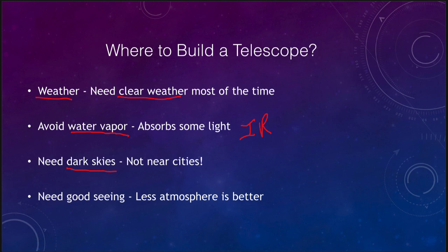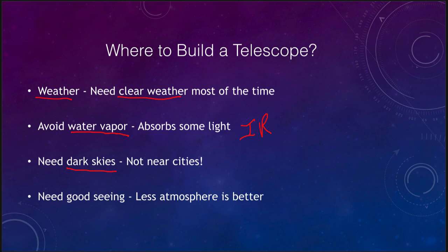We also need dark skies and don't want to observe near a city. A hundred years ago, large telescopes were built near cities like Chicago and Los Angeles, and it wasn't such a big deal then. But putting telescopes in those areas now is not a good thing. We tend to put them out in the deserts — places like Arizona and the desert southwest are very good because we get relatively dark skies, good weather most of the time, and we're up above most of the water vapor. Telescopes in Hawaii may not sound ideal for water vapor, but when you're high up on the mountains, you're above most of the water in the atmosphere, and with less atmosphere to look through, you also get better seeing.